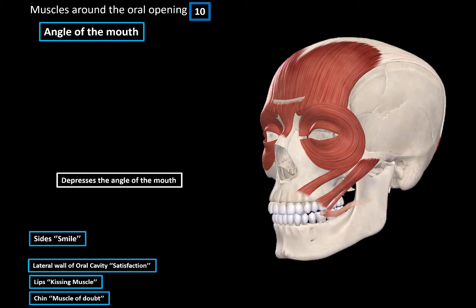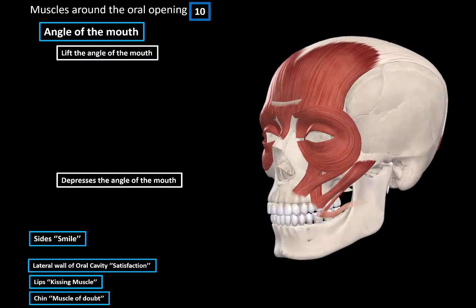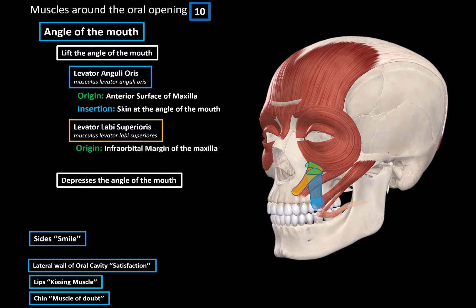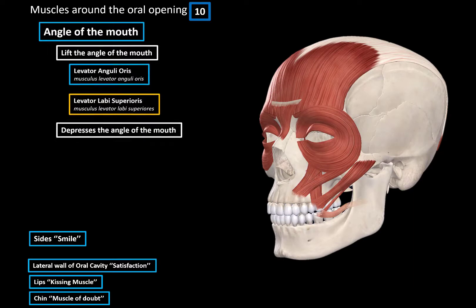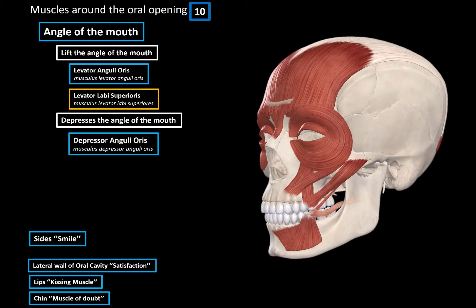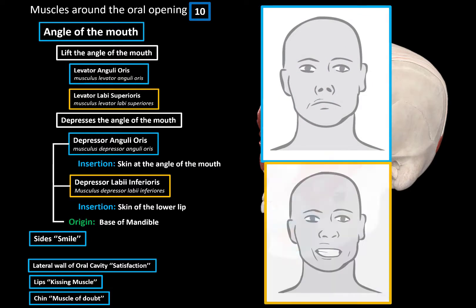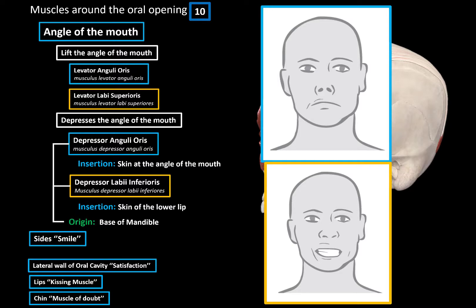Next we have muscles that either depress or lift the angle of the mouth. The muscles that lift the angle are the levator anguli oris, originating from the anterior surface of the maxilla, and the levator labii superioris, originating from the infraorbital margin of the maxilla — both inserting at the skin of the angle of the mouth. The muscles that depress the angle are the depressor anguli oris and the depressor labii inferioris, both originating from the base of the mandible. The depressor anguli oris inserts at the angle of the mouth making a sad face, while the depressor labii inferioris inserts at the skin of the lower lip, depressing and pulling the lower lip laterally, producing an expression of contempt.